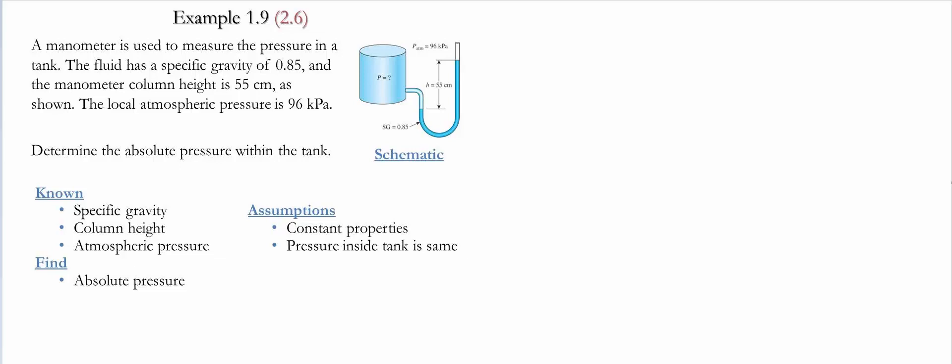In this example, we have a manometer that is used to measure the pressure inside a tank. The fluid has a specific gravity of 0.85 and the manometer height is 55 centimeters. The local atmospheric pressure is 96 kilopascals. We need to determine the absolute pressure of the tank.